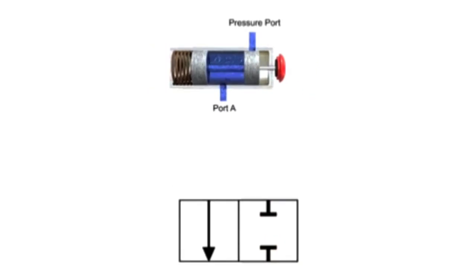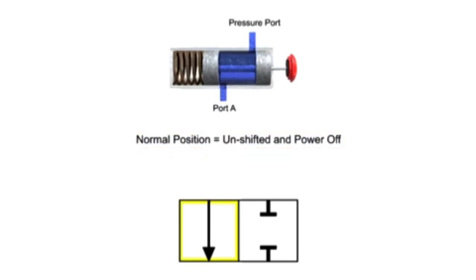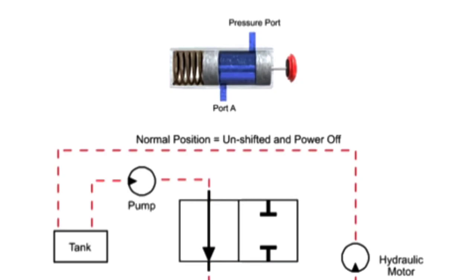Lines are drawn to indicate the normal position of the valve. The normal position is defined as the position of the valve when its spool is unshifted and the power is off. This means that any mechanical actuators, such as springs, are in their non-actuated positions, and electrical actuators, such as solenoids, are powered off. The normal position can also be referred to as the unshifted, de-energized, or unactuated position. In this case, position 1 is the normal position, so the lines are drawn in the first box. On a hydraulic schematic, the lines indicating the normal position will be connected to other devices in the system.